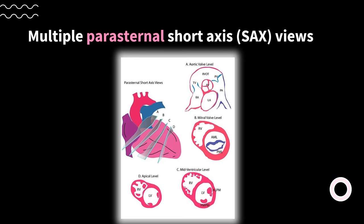Before we talk about the subcostal short axis views, let's discuss the parasternal short axis views. There are actually many levels: here's a parasternal short axis view at the level of the aortic valve. Moving the probe toward the apex, you'll get the mitral fish mouth view, then the mid-ventricular level view, and finally the apical view. These are all parasternal short axis views at different levels of the heart.